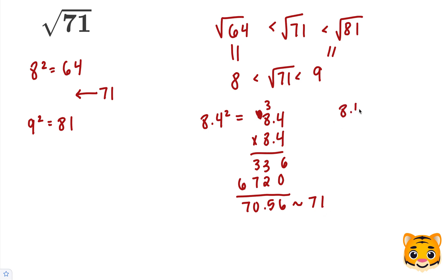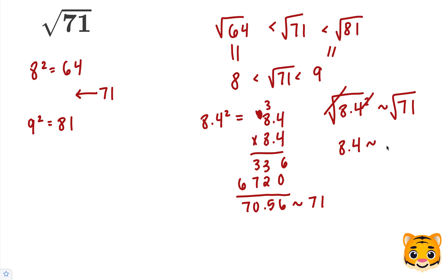Now we can say that 8.4 squared is approximately 71. We can then take the square root of both sides. When we take the square root of 8.4 squared, the squared and the square root cancel, and we get 8.4 is approximately the square root of 71. This will be our approximation: the square root of 71 is about 8.4.